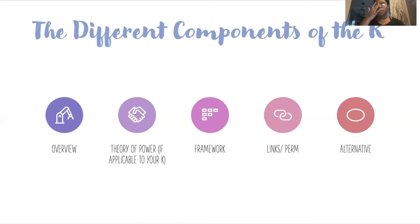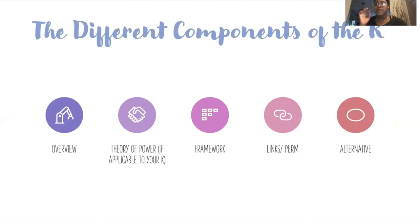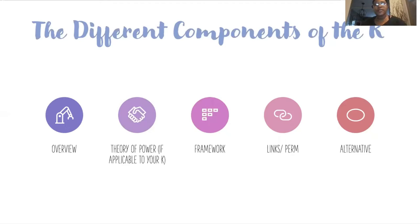The different components of the critique — we've got five: there's the overview, theory of power (if applicable to your critique, because not all critiques are made the same), framework, links slash the permutation, and the alternative.